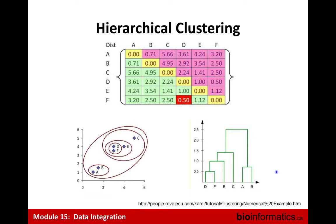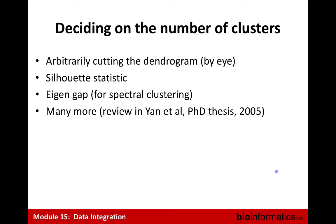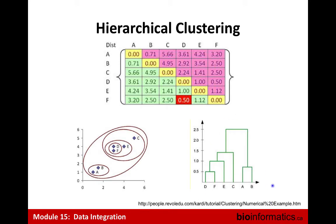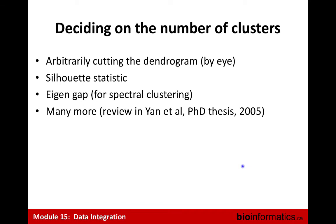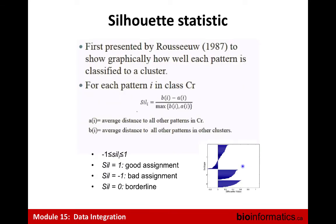Deciding the number of clusters: you could cut the dendrogram by eye. If you were going to cut this by eye, how many clusters do you think this would have? Probably two — this is a really long line here and here, so these groups seem pretty different. That's really hard to write up in a paper, so it's nice to have some metrics and numbers. The silhouette statistic takes your distance within the cluster and compares it to distances in all other clusters from your individuals, asking: does it make sense to have these people in their own cluster, or are they actually quite similar to everyone nearby? Am I cutting clusters in half or are these actually separate groups?